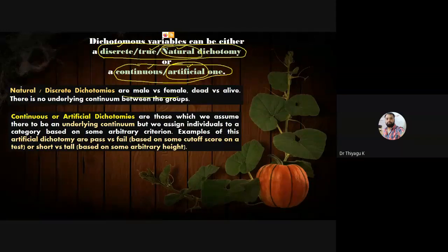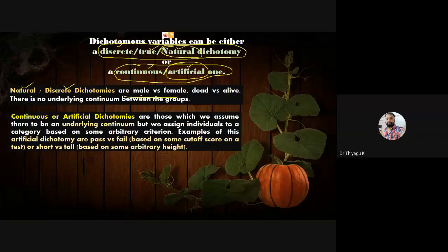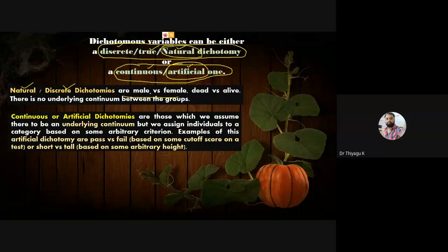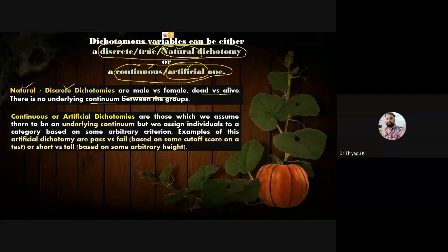Natural and discrete dichotomous are the same — for example, male or female. We can easily categorize the group into two-fold in an actual way without fixing any standard rule. Male and female can be classified naturally. There are only two possibilities with no underlying continuum in between — no one exists between male and female. If a third category like transgender appears, the variable is no longer dichotomous because it becomes a three-category classification.